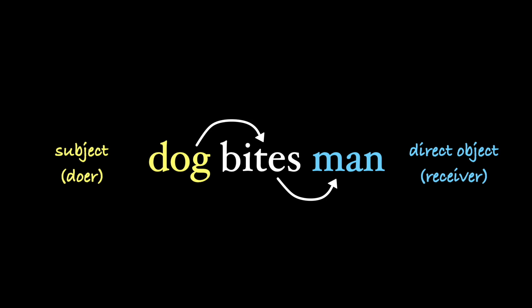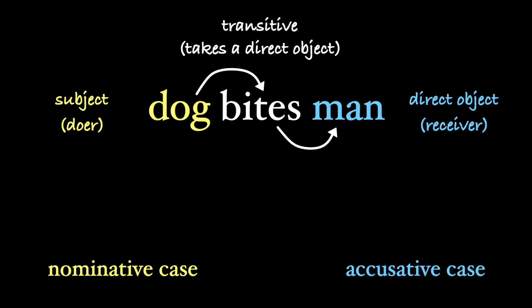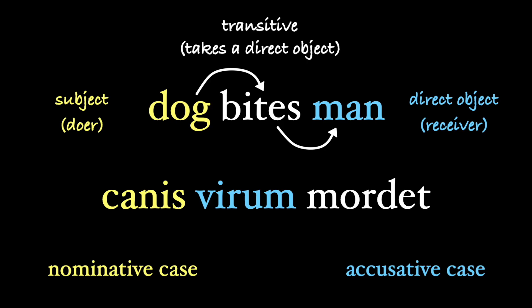A verb is considered transitive if it can take a direct object. So in our sentence, 'bites' is a transitive verb. Latin puts the direct object of a transitive verb into the accusative case. The subject, by the way, is in the nominative case — that's rule number 13. If we were to give our sentence in Latin, it would be 'canis virum mordet.' The nominative 'canis' is doing the action, while the accusative 'virum' is receiving the action as the direct object.